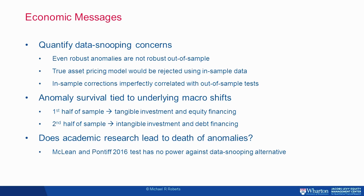Economically, there are three broad takeaways. First, we're able to loosely quantify data snooping concerns — even so-called robust anomalies are not robust once you move out of sample. The data snooping problem is so severe that under relatively conservative assumptions, the true asset pricing model would be expected to be rejected in sample. Moreover, in-sample corrections for multiple hypothesis testing are imperfectly correlated with out-of-sample results — size distortions remain even after adjusting.